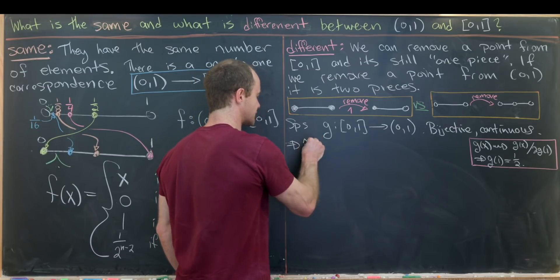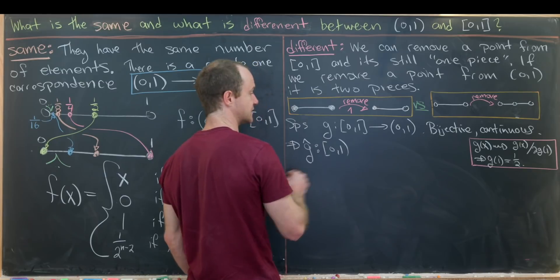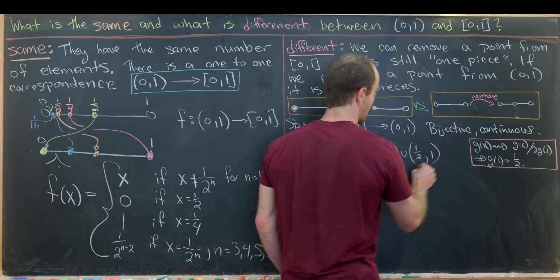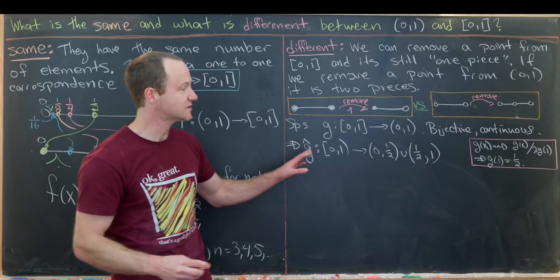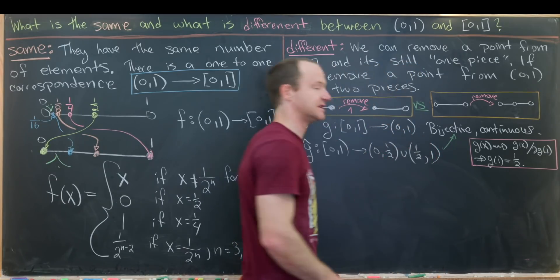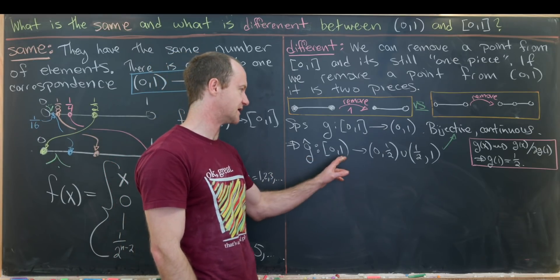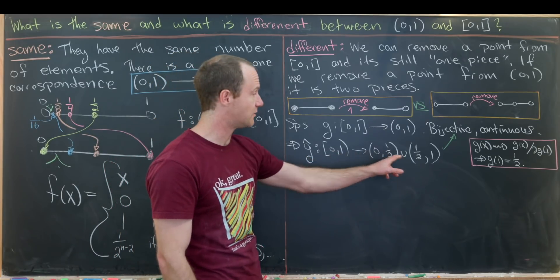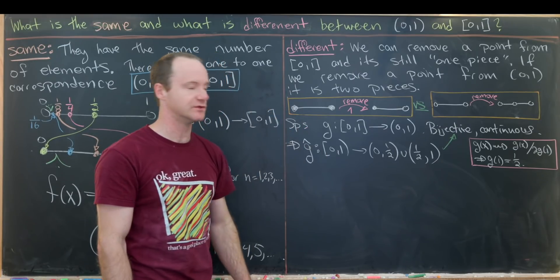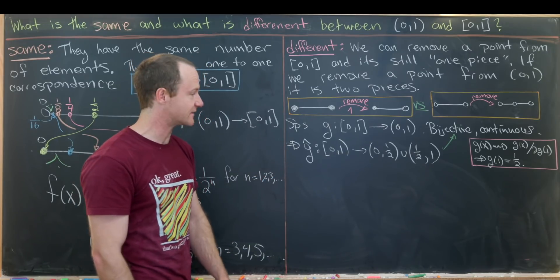So in other words, we've got this restriction g hat, which goes from the half open interval [0,1) into the union of intervals (0,1/2) union (1/2,1). So again, this is also bijective and continuous. So we won't check that here, but maybe just to talk through it a little bit, it's bijective because we just removed a single point from both sides. And it's continuous because any time you have a restriction of a continuous function, it is continuous. And that's exactly what we have here. But that's actually going to give us a problem.